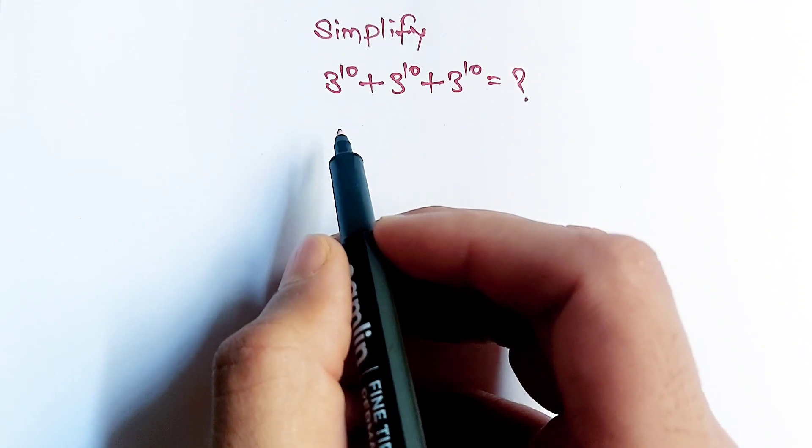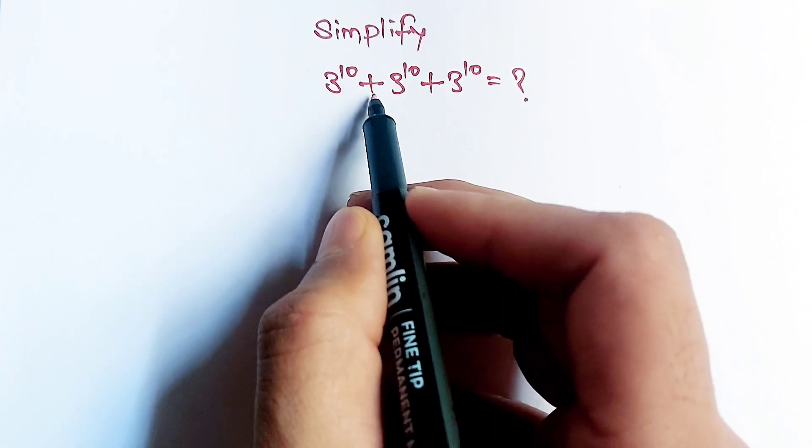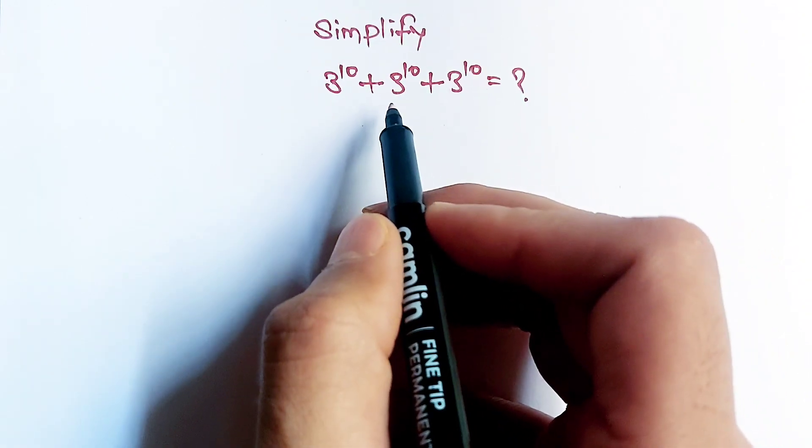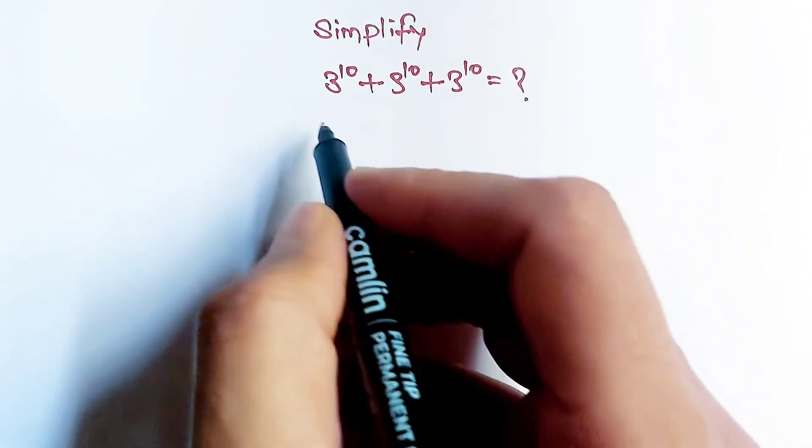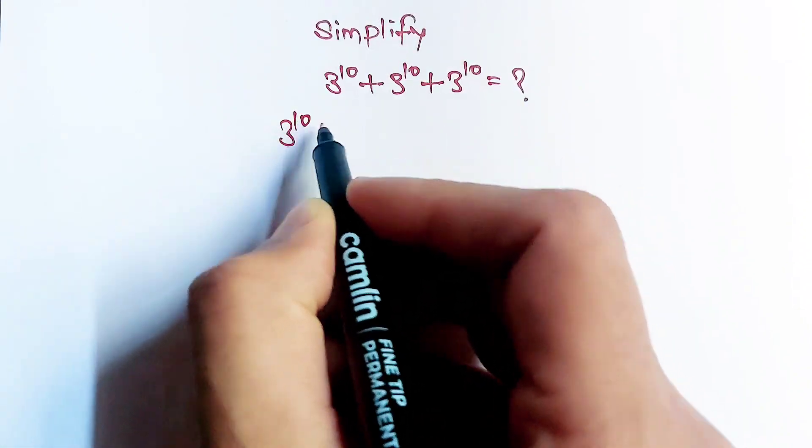Hello! The question is 3^10 + 3^10 + 3^10 and we have to simplify this question. Let's find out how we will do it. Now take 3^10 as a common term.